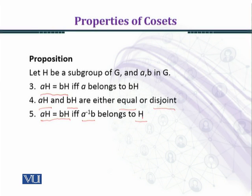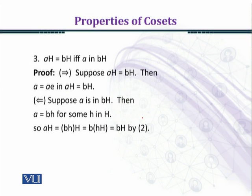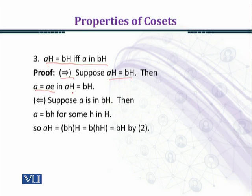Now we prove these properties one by one. We prove that AH equals BH if and only if A is in BH. We establish the direct implication. We are given that AH equals BH. Then we can write A equal to AE, which is in AH. Since AH equals BH, A belongs to BH. This is what we have to prove.